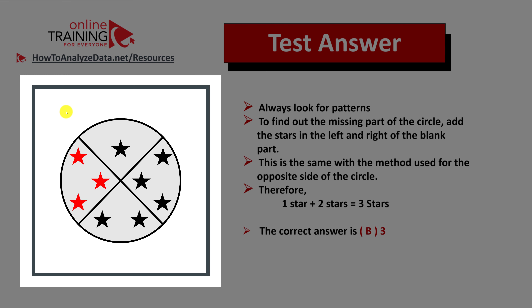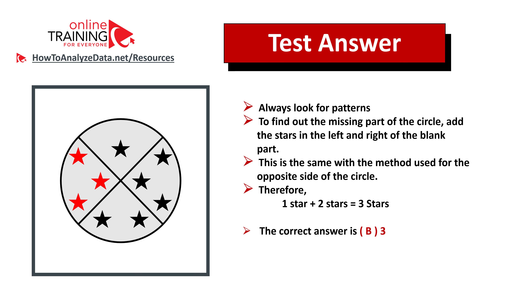The pattern here is symmetry. If you draw a line in the middle of the circle from top to bottom, the answer must be symmetrical. Using the mathematical operation hinted at, we take the stars from the left of the blank part and add the stars from the right: one plus two equals three. You can also use subtraction to arrive at a similar answer — if you figure out how, post it in the comment section.